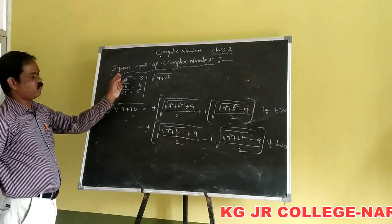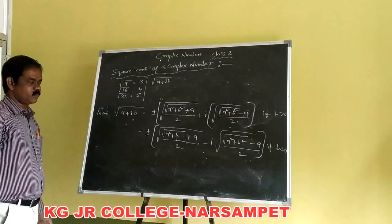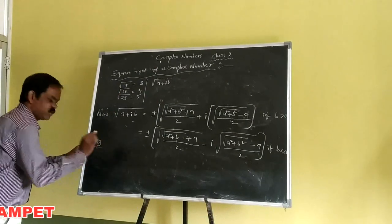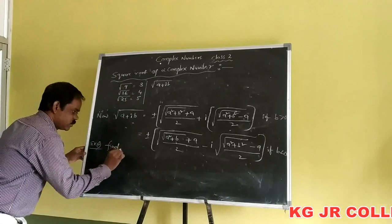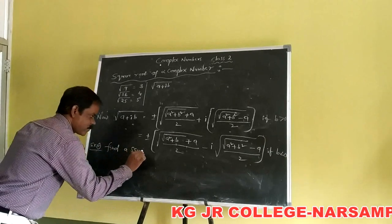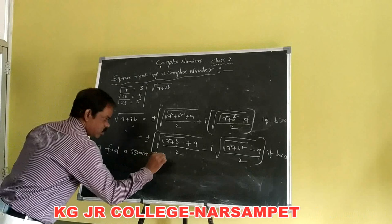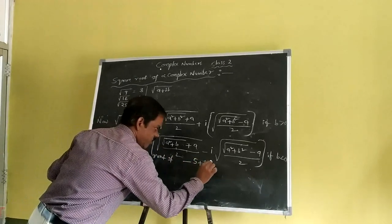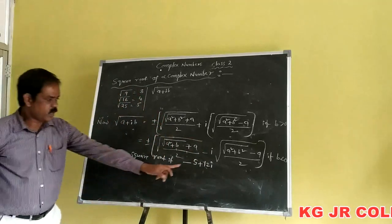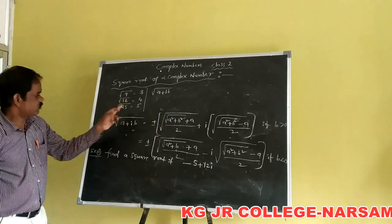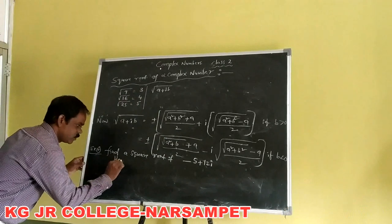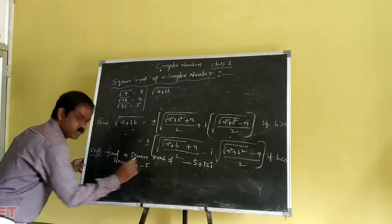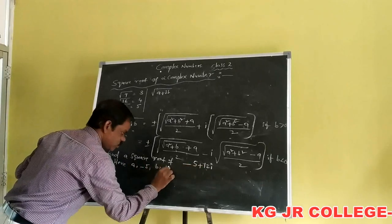This is the form for finding the square root of a complex number. Example number 1: find the square root of the complex number minus 5 plus 12i. Comparing with our formula, the value of small a is minus 5 and small b is equal to 12.